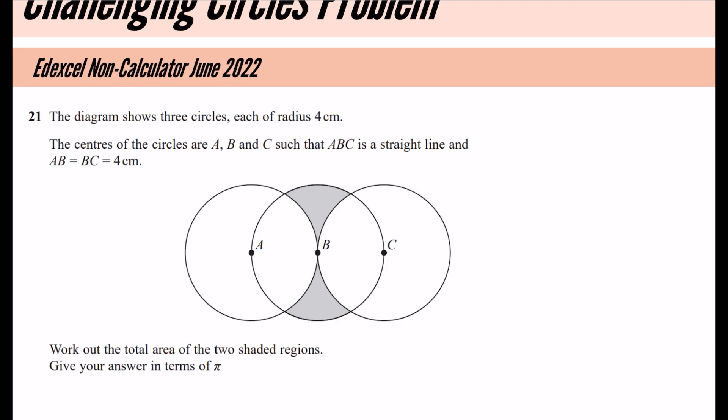Work out the total area of the two shaded regions. Give your answer in terms of pi. Now, it is a non-calculator one. So let's think about a strategy, and there's lots of different ways of approaching this. This is just how I would think about this. I'm not going to do it with two shaded regions. I'm going to start off doing it with one shaded region, just looking at this one at the top. And then at the end, I'm going to double my answer.